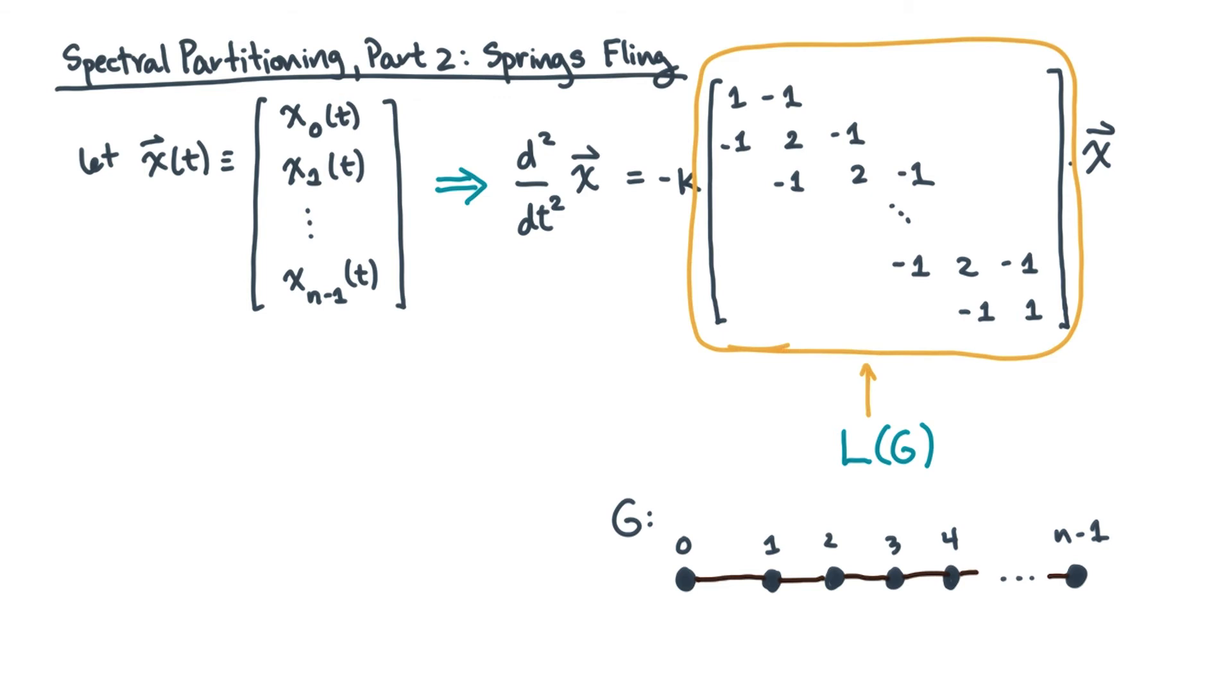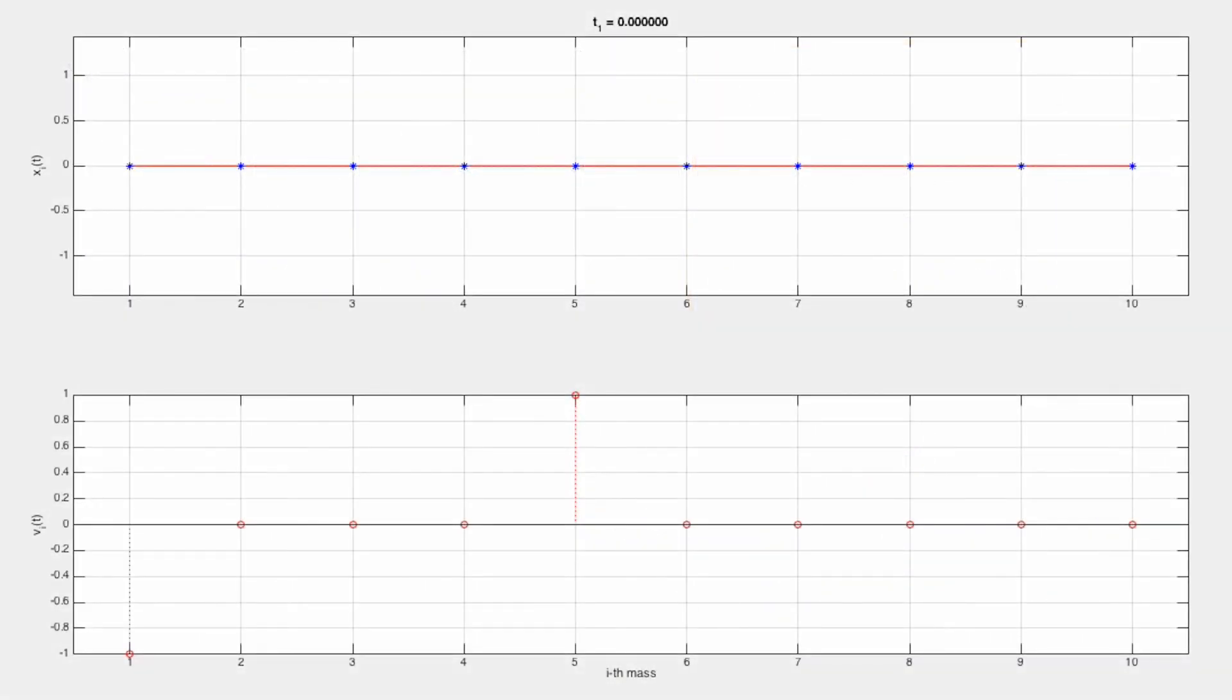Start by asking yourself, what would the motion of this system of weights and springs look like? The top plot is the displacement of all the weights. Every weight is a dot, and the springs are the solid lines connecting the dots. The bottom plot will show you the velocity of all of the weights.